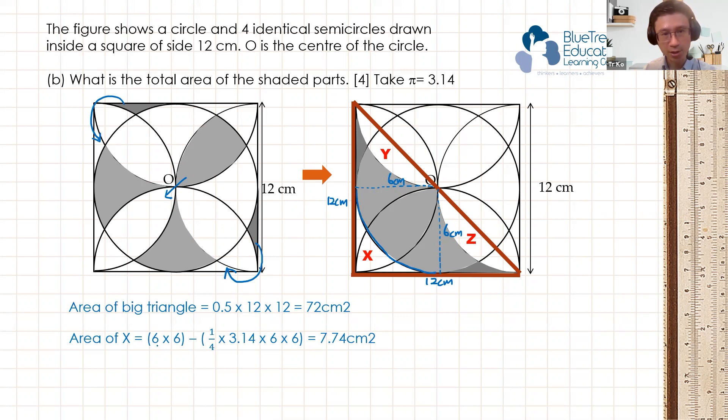So the area of the square is 6 cm by 6 cm, so it's just 6 times 6, take away a quadrant. A quadrant is 1 quarter times 3.14 times 6 times 6, 1 quarter pi times r times r. And I get 7.74 square centimeters.